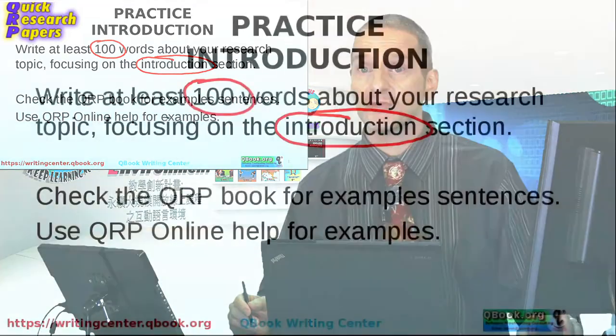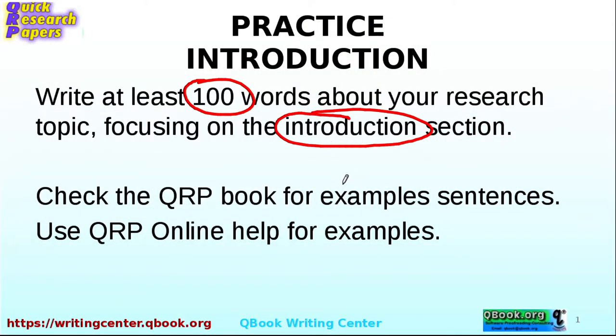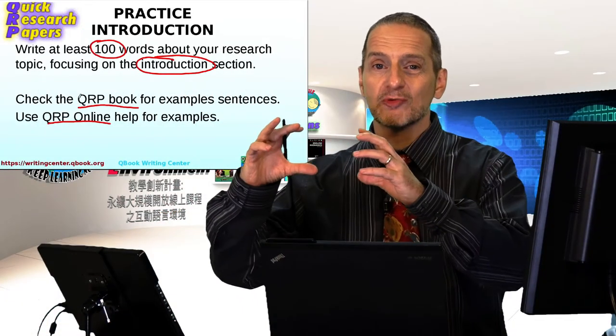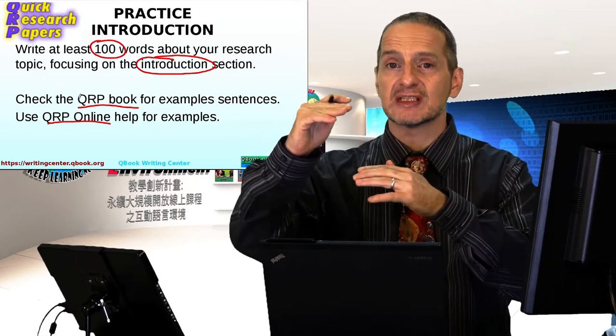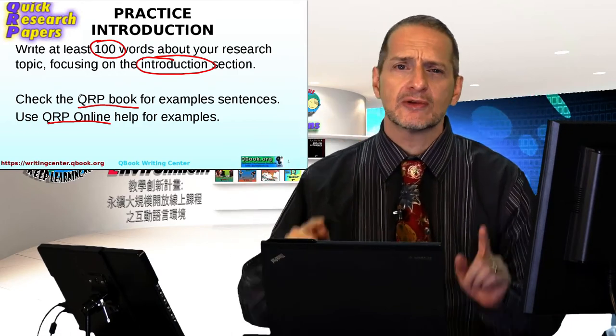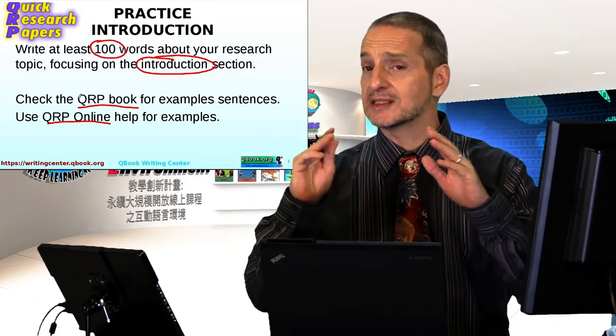So again, 100 words focused on the introduction. Use your QRP software. And remember, the QRP e-book has some great examples in it that you can use. And also QRP online, when you're using it, has that little yellow help box right next to where you're writing. You can click there and get a bunch of example sentences.